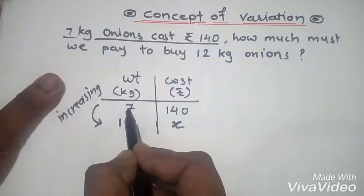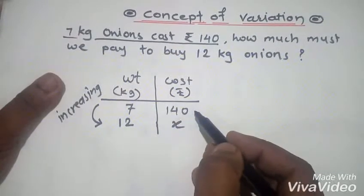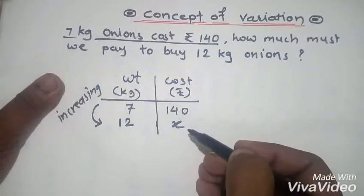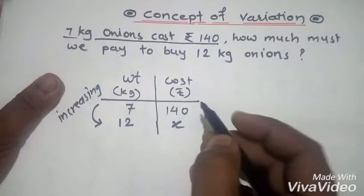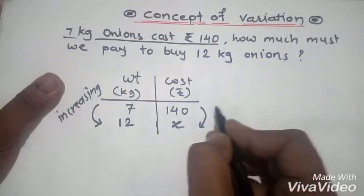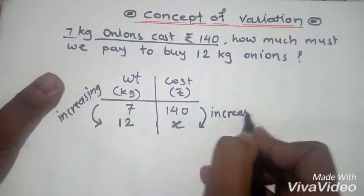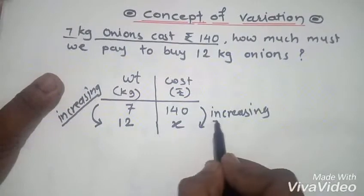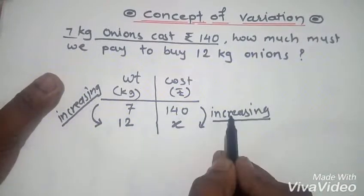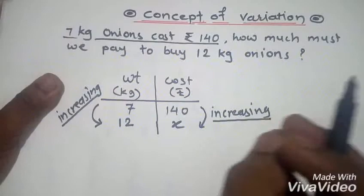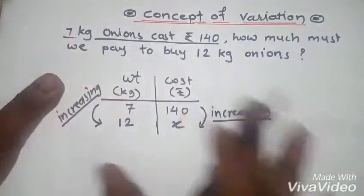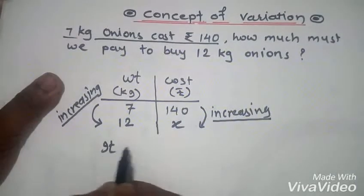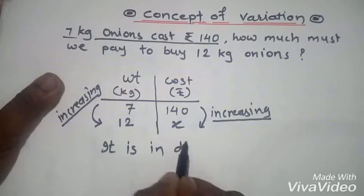If for 7 kg of onion we pay ₹140, then for 12 kg are we going to pay more or less than ₹140? Of course we have to pay more, so the change in cost is also increasing. Both changes are increasing, so the changes seen in the two quantities are the same.